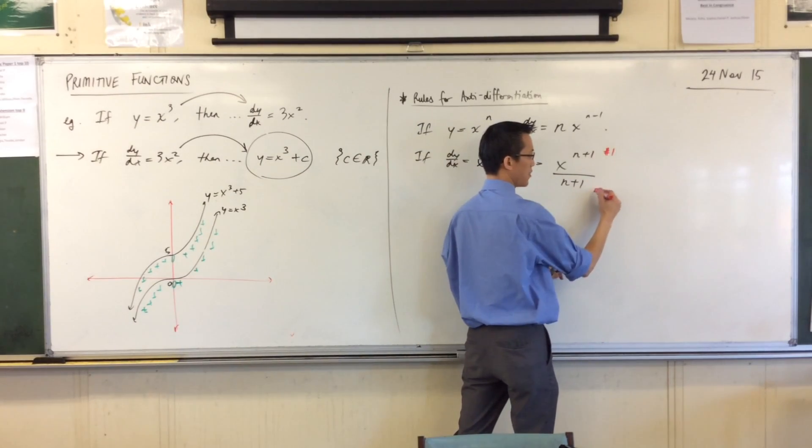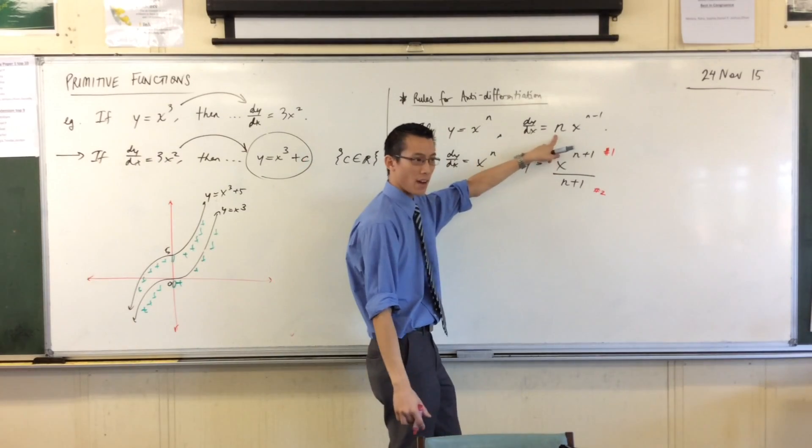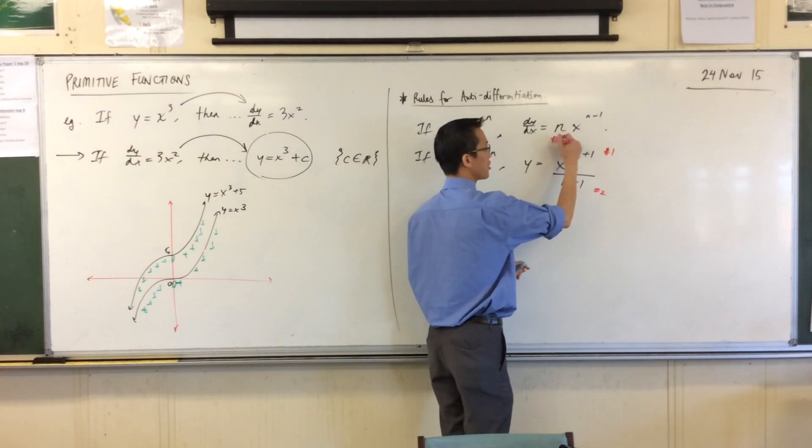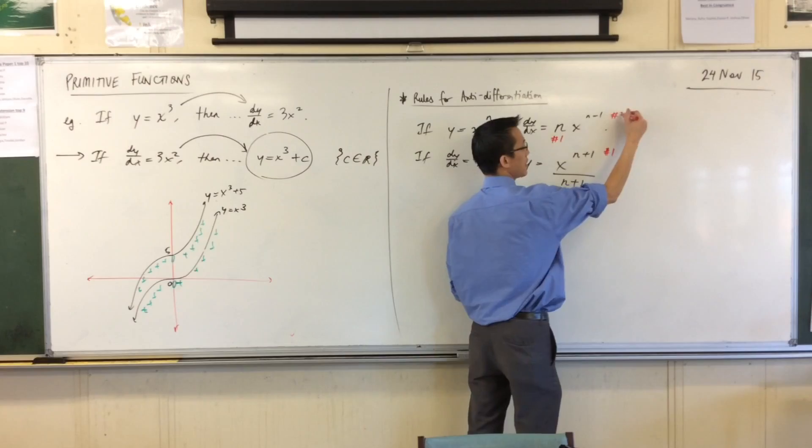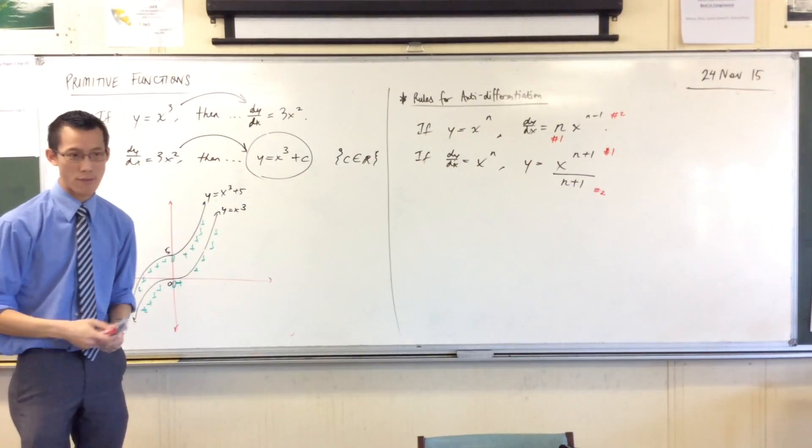The power comes first, and the division comes second. The reason why is because back here, the multiplication came first, and then the power came second. You see, we're doing them in reverse order. If you do them the other way around, you won't get the right answer.